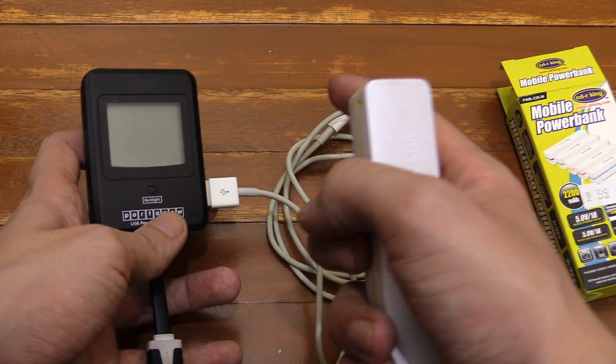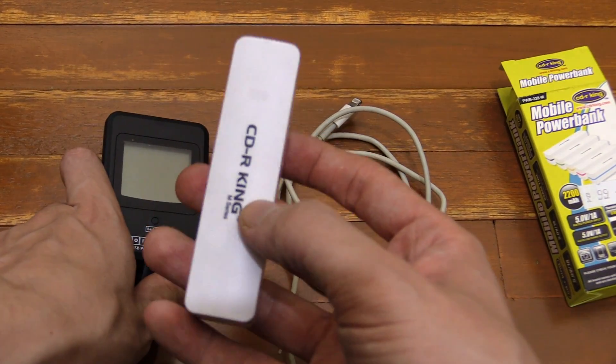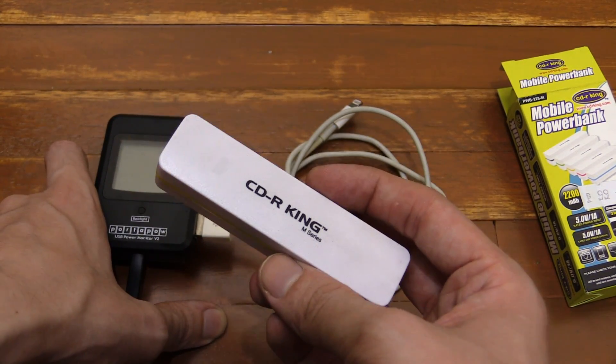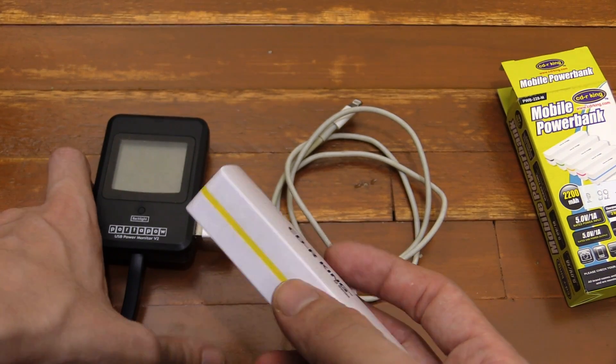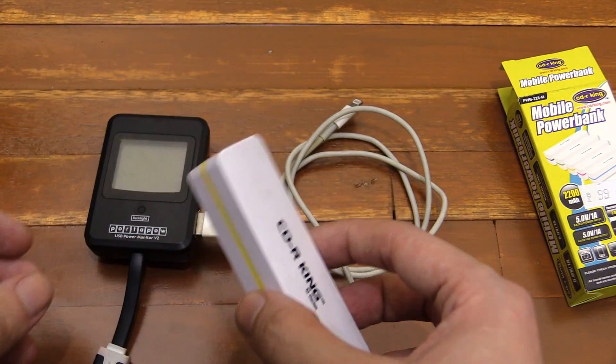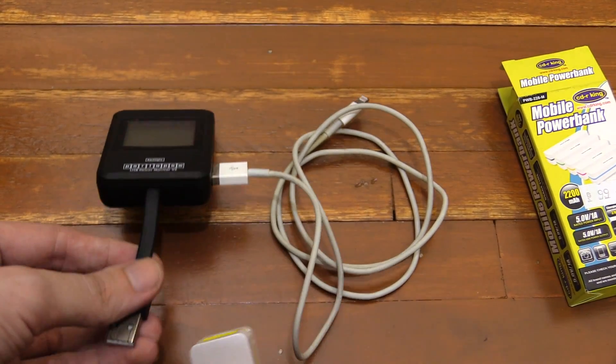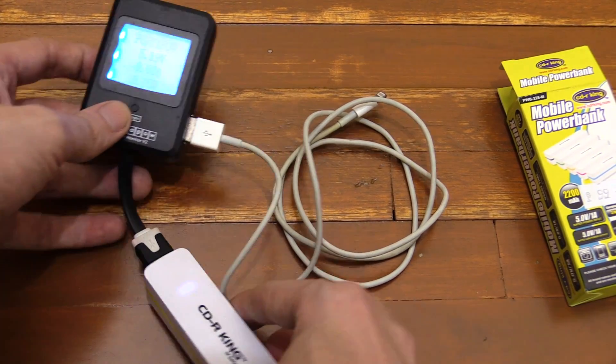So let's test if we can really get one amp out of this because when I was buying this, the people at CDR King were like, sir, it's only for dumb phones. Don't buy it for a smartphone. It can't be used for a smartphone. I said yeah, just give it to me. I want to try it. So it does work fine with my iPhone. So I'm not really sure what they were talking about.